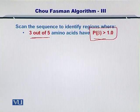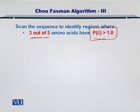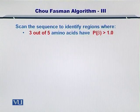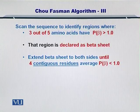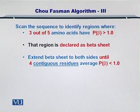So you start and you seed a beta sheet like that. You start the formation of a beta sheet if you find 3 out of 5 contiguous amino acids which have a propensity for formation of a beta sheet greater than 1. You then declare that as a beta sheet and now you want to expand it — you can extend the beta sheet, as you did with the alpha helix, to both ends, upstream and downstream of the sequence.